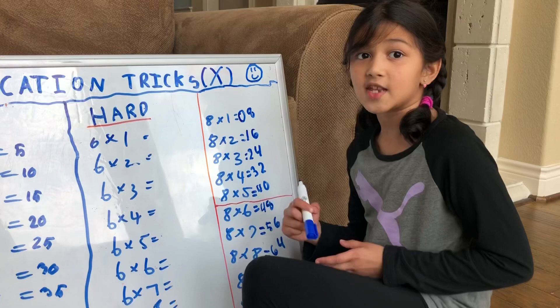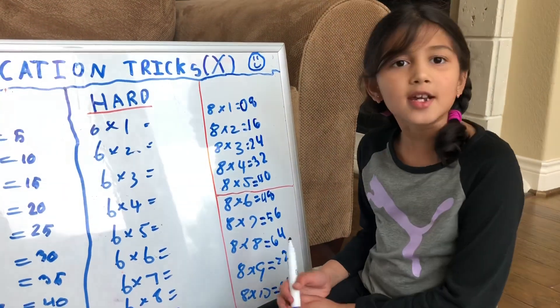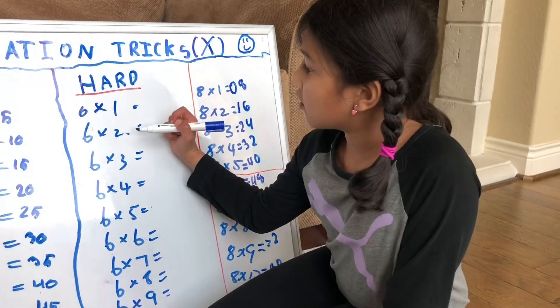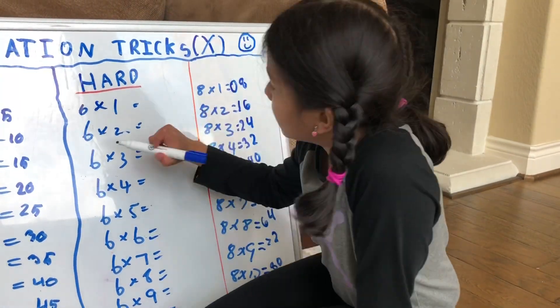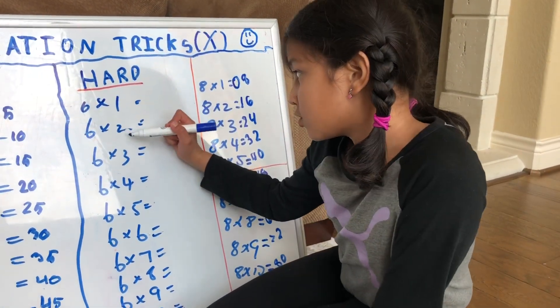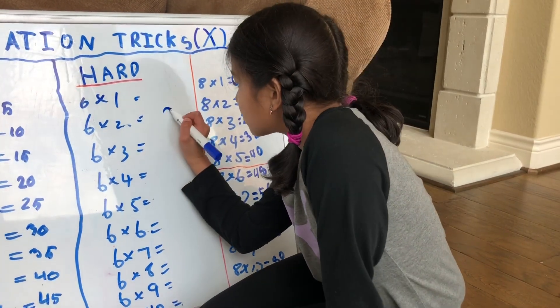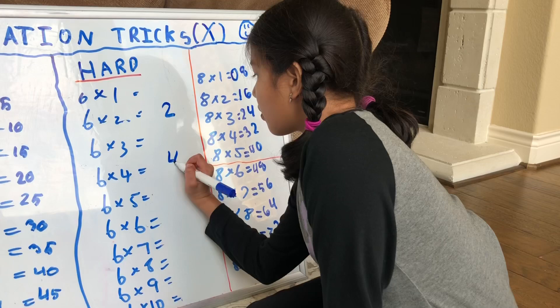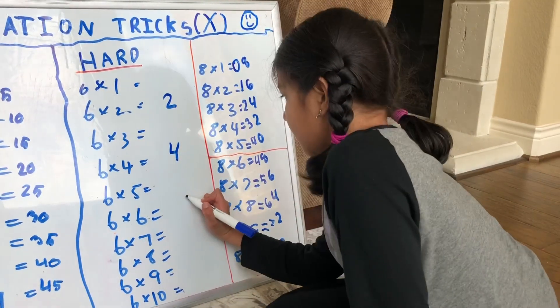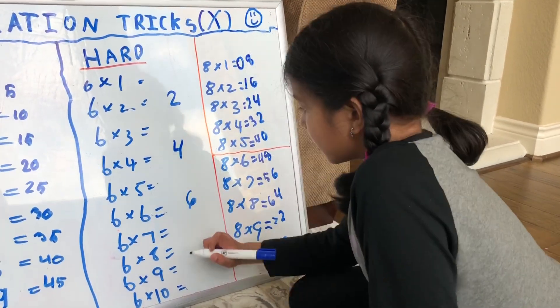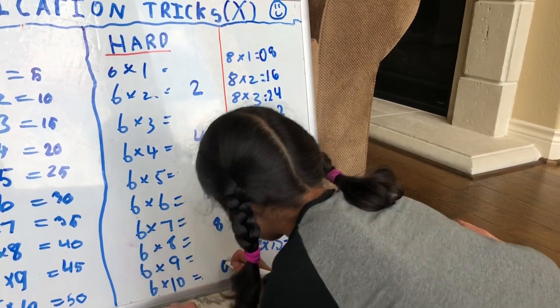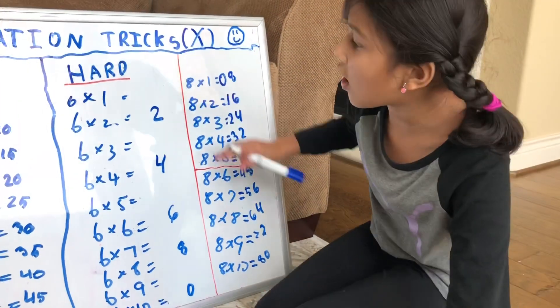Let's move on to the 6s. In the 6s, let's start with the evens. You'll see 2 times—like 2 in the ones, 4 in the ones, 6 in the ones, 8 in the ones, and 0 in the ones. Then you'll have all of these.